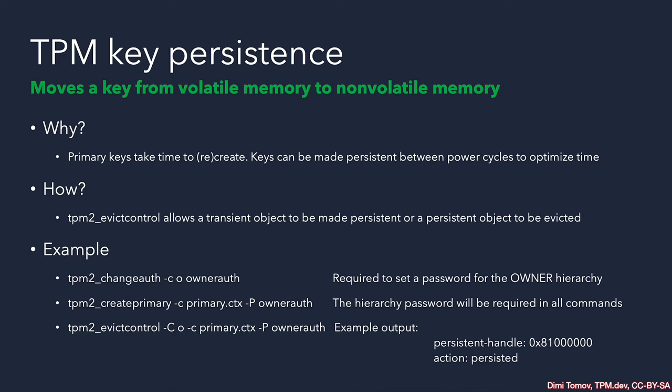When we persist a TPM object, it will be there regardless of how many times we turn the system on and off or power the TPM on and off — the object will remain loaded. That is the benefit of this operation. But at the same time, it means that if we need to load a different key, we need to first remove this key. This operation is called evicting, and the command is TPM2_EvictControl.